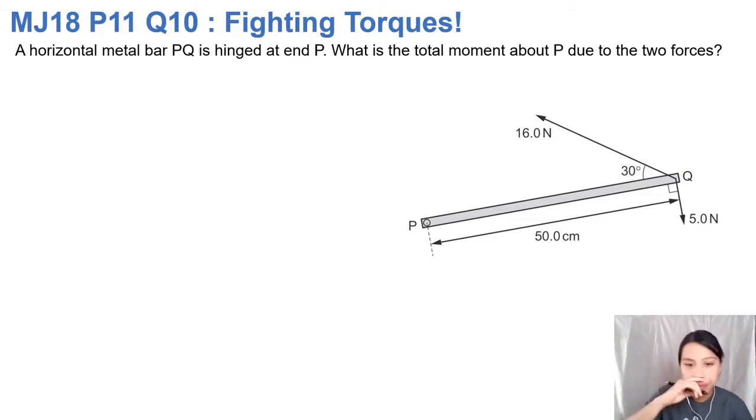How about some calculation questions? Fighting torques. This is a past year question on page 25 if you want to follow on your handout. Here we have a horizontal metal bar hinged at end P. Hinged, oftentimes we'll just choose the hinge as our pivot. So there we go, we have a pivot. You can choose where the pivot is. Pivot doesn't necessarily have to be the hinge, but if we got a hinge, let's make it a pivot.